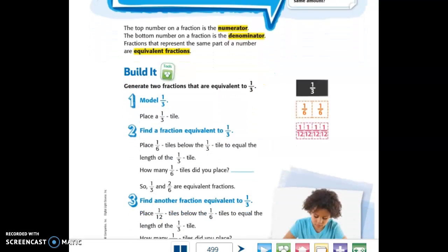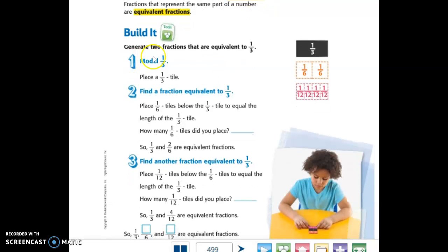So our first example is generate two fractions that are equivalent to one-third, and they've given us a model here. They modeled a one-third tile at the top, and then find a fraction that is equivalent to that, and you can see here they've got one-sixth tiles. When they place two of the one-sixth tiles, the lines on both sides measure up, so this is equal in size to this. And they also found the twelfth tiles, and by lining them up, they found that by placing four one-twelfth tiles, they will equal one-third.